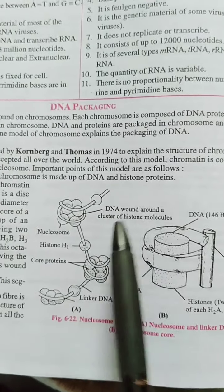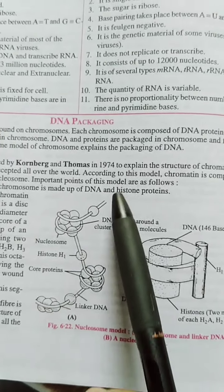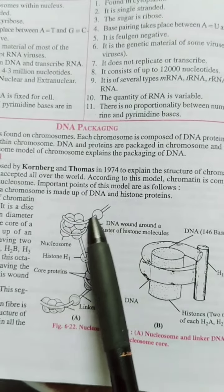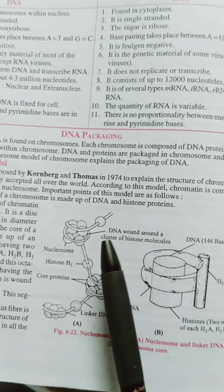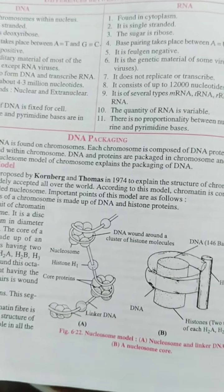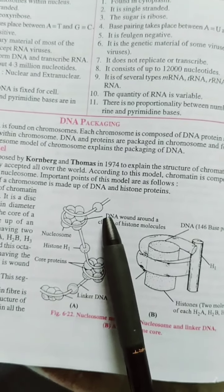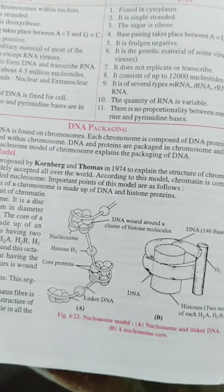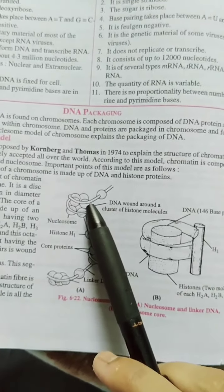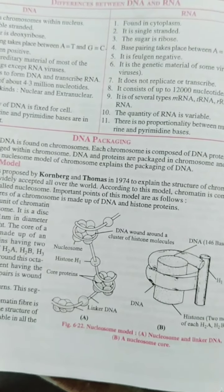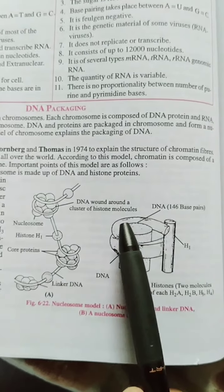This is the nucleosome model — a proposed model. This is the nucleosome structure, also called the beaded string structure, with a diameter of 10 nanometers. This is the core portion. Histone proteins are of different types: H2A, H2B, H3, and H4. This is the coil of DNA.